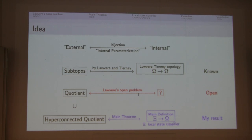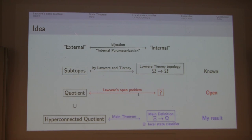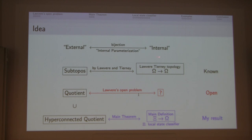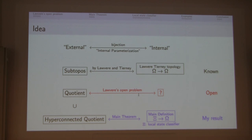Today I talk about Internal Parallelization, as in the title. The rough idea of Internal Parallelization is a bijective correspondence between external things related to a topos and internal things related to a topos. Perhaps the most famous such internal parameterization is the bijective correspondence between sub-toposes and Lawvere-Tierney topology, established by Lawvere-Tierney.